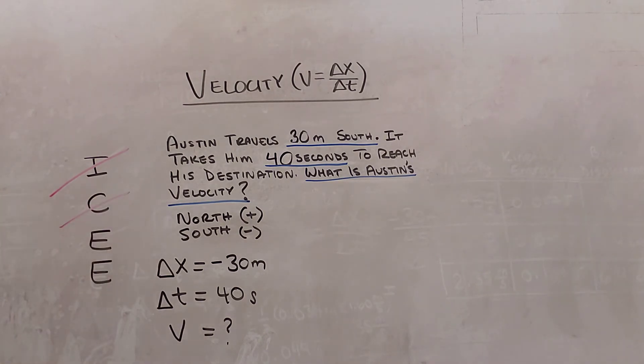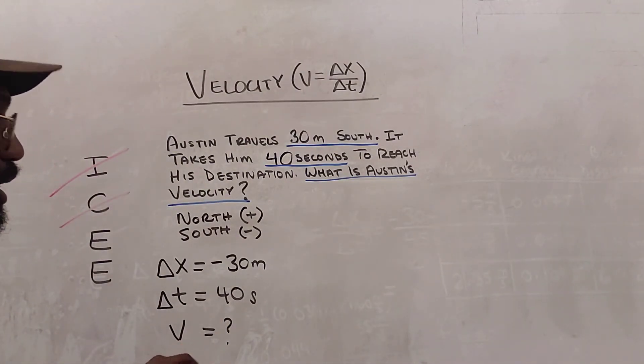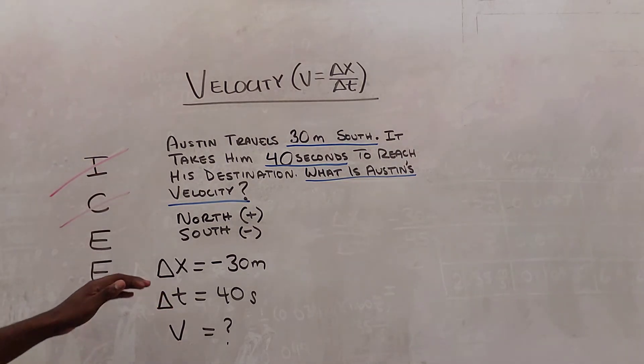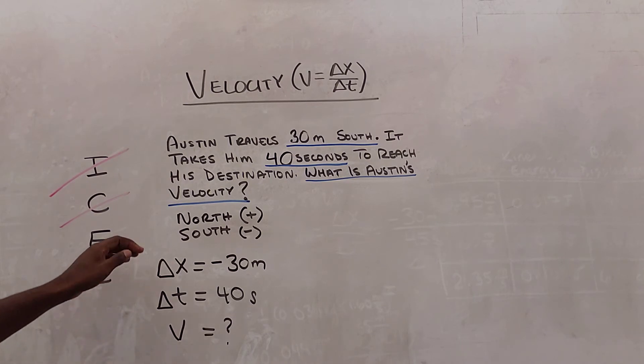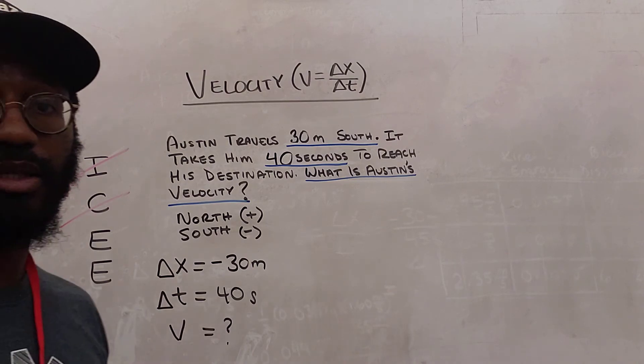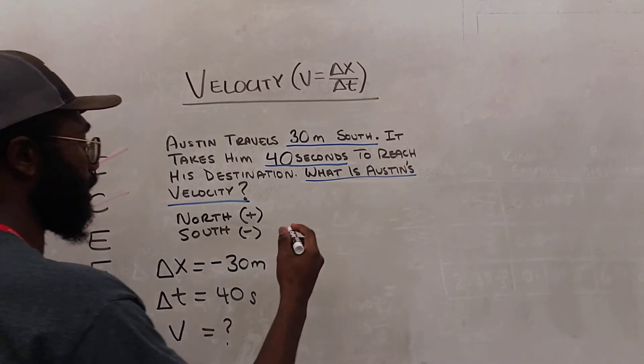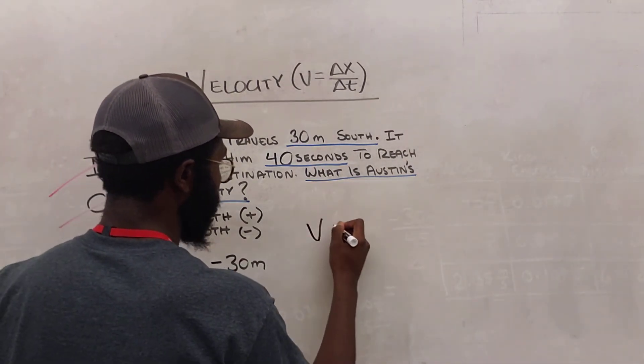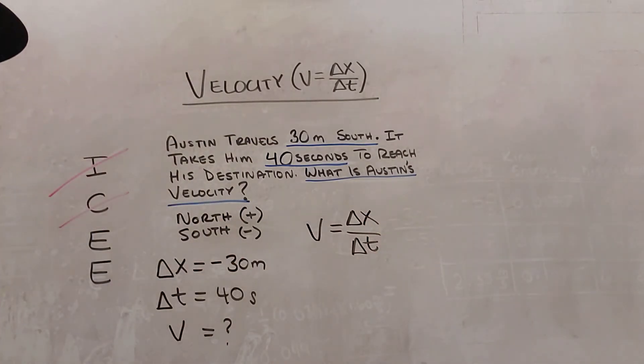Next, we have to equate. Now when we equate, we are choosing an equation that's going to help us find our missing variable. So when we choose an equation, we want to choose one that has all of these variables in it: everything we know and what we do not know. So we're looking for an equation with delta X, delta T, and V. Now, because this is a tutorial on this velocity equation, we know we're using that velocity equation. So we'll go ahead and write it. So we have V, delta X, and delta T all present in this equation, so we know we can go ahead and use it.